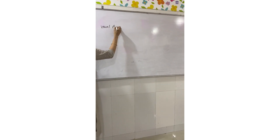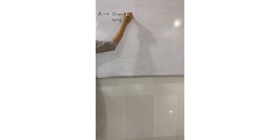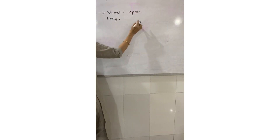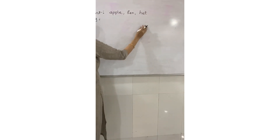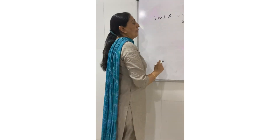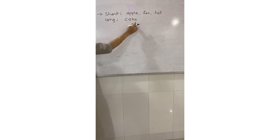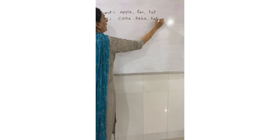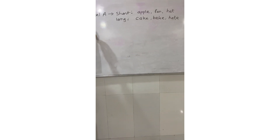Vowel A has a short sound and a long sound. Short sound examples: 'apple', 'fan', 'hat'. These are the short sounds of A. Long sound examples of vowel A: 'cake', 'bake', 'hey'. These are the long sounds of vowel A.